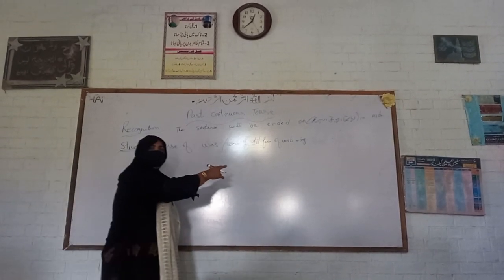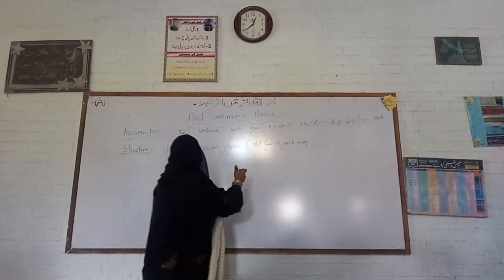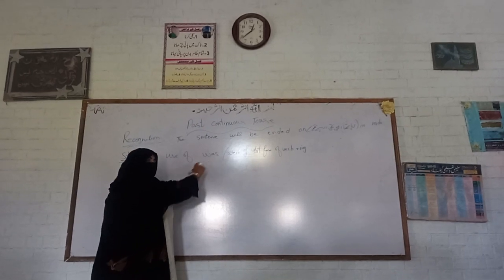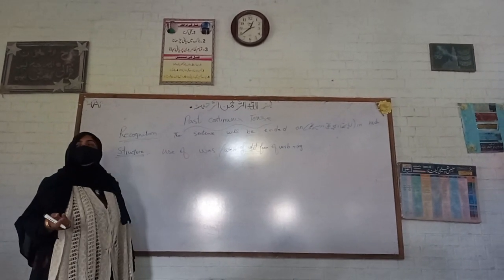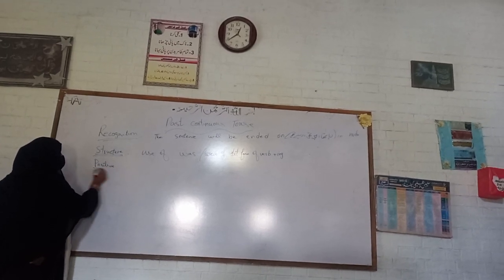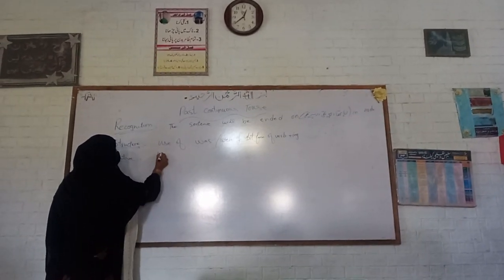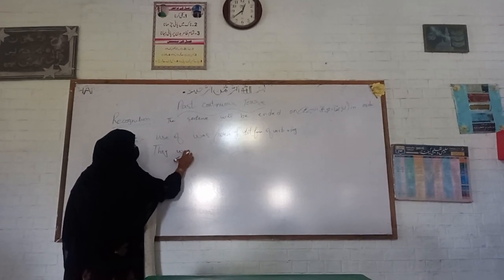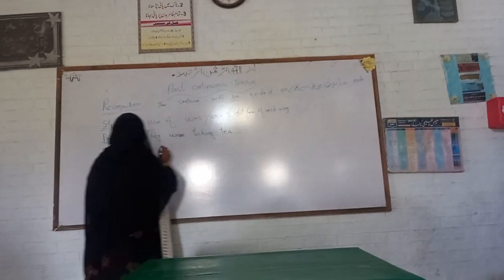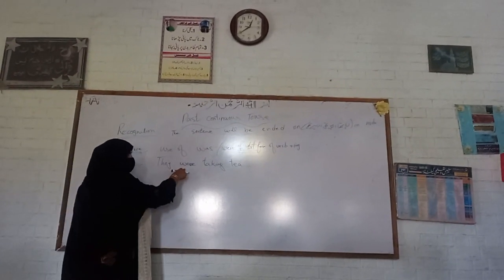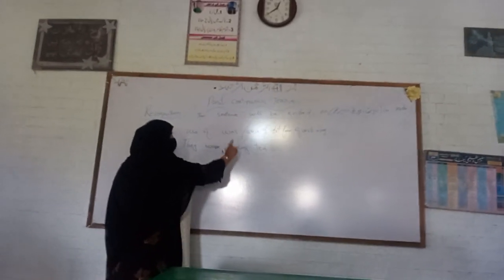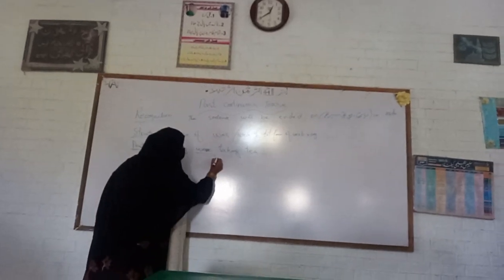This is the simple sentence structure. To make the sentence negative, we add 'not' after 'was' or 'were'. To make the sentence interrogative, we place 'was' or 'were' at the start of the sentence and add a question mark at the end. Now let's discuss the positive statement. For example: 'They were taking tea.' Here, 'they' is the subject, 'were' is selected because the subject is plural, and 'taking' is the verb with '-ing' added.